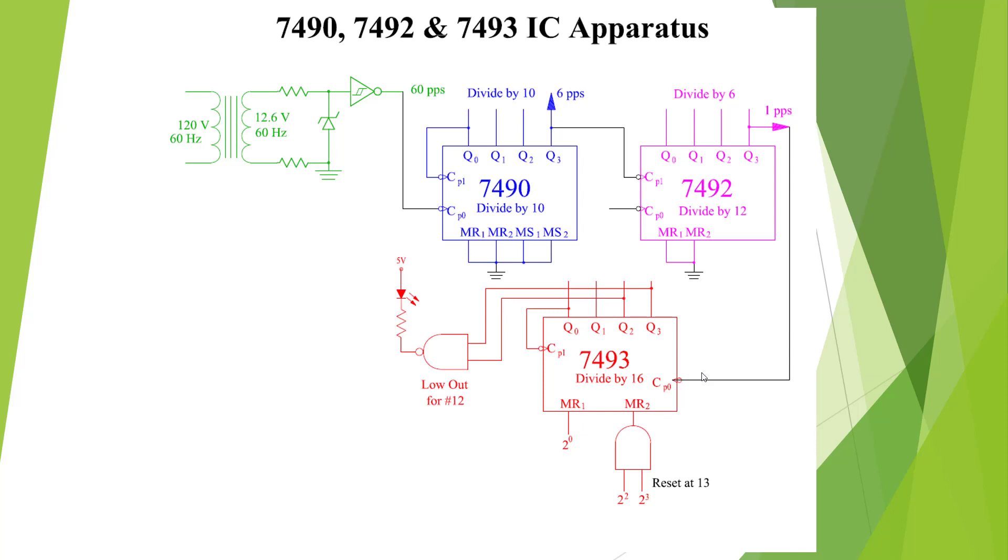This final circuit is made up of the 7490X family. We have a divide by 10, 7490. We have a 7492 is a divide by 12. 7493 is a divide by 16. We have a transformer that drops 120 volts down to 12.6. We have a zener here to limit the voltage to our inverter. Our inverter is a Schmidt trigger. Here's a Schmidt trigger signal. So we're getting a 60 pulse per second into the clock, and it's going to be a square wave.